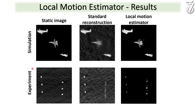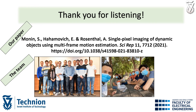In the second row, you can see an experimental result constructed out of a static part of the image and a dynamic part of the image. And you can see how our algorithm is able to recover the dynamic part of the image, although it disappears completely in the standard reconstruction. We hope you enjoyed our work and thank you for listening.